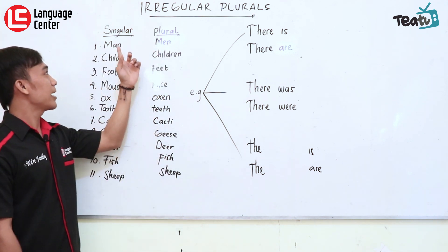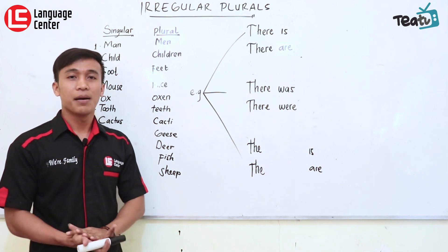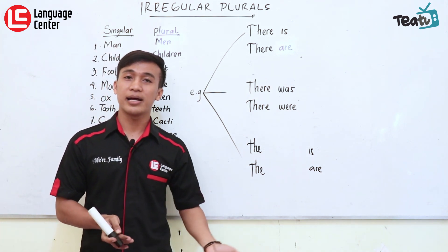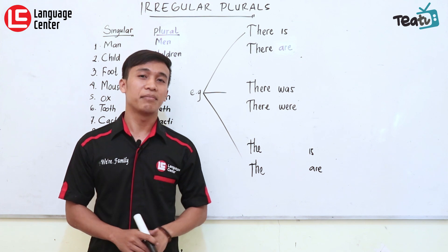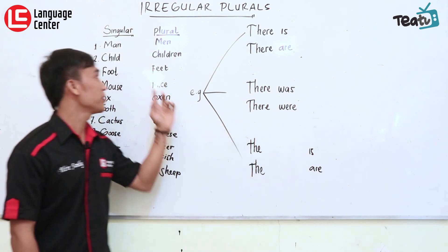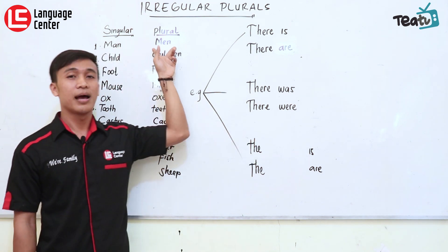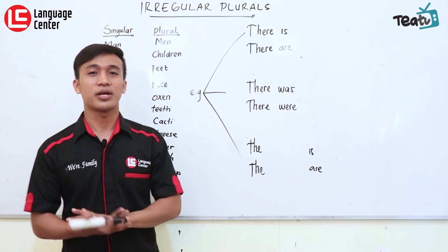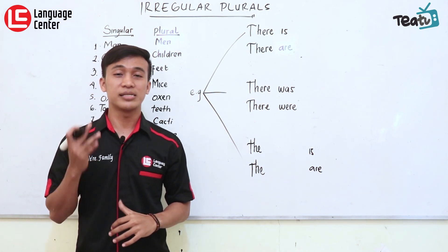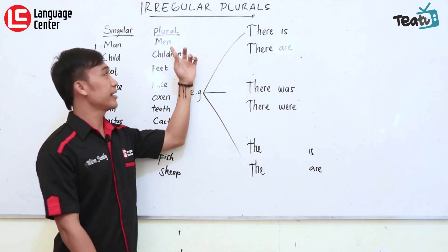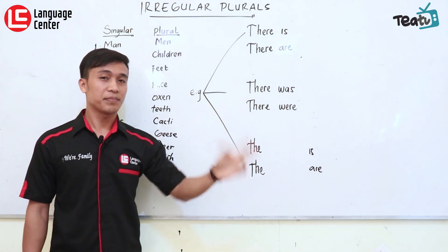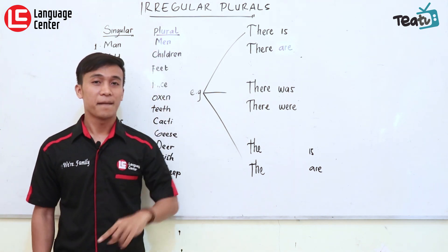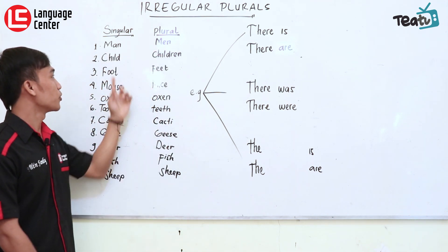Yang pertama adalah 'man'. Man itu sendiri — lelaki yang sendiri — misalkan kalau mannya banyak, dia tidak bisa ditambah S. Tapi dia punya perubahan sendiri, namanya 'men'. Maka dari itu ketika dalam sebuah pertemuan pasti ada sambutan 'Well, ladies and gentlemen.' Ladies kan ditambah S, sedangkan gentlemen — kalau perubahannya banyak — menjadi 'men'.